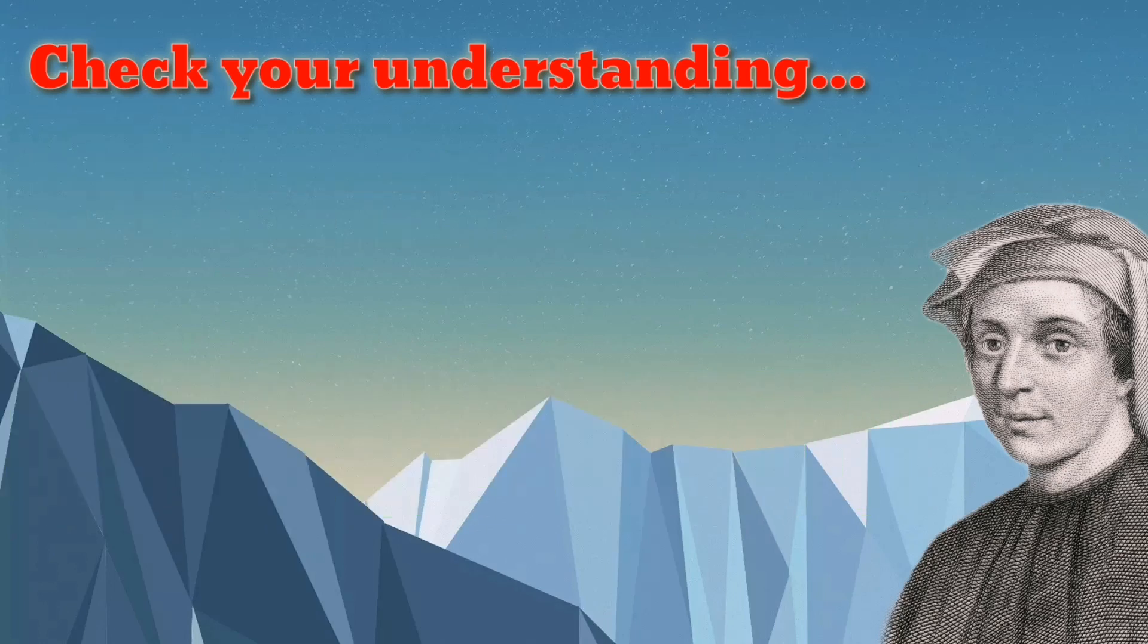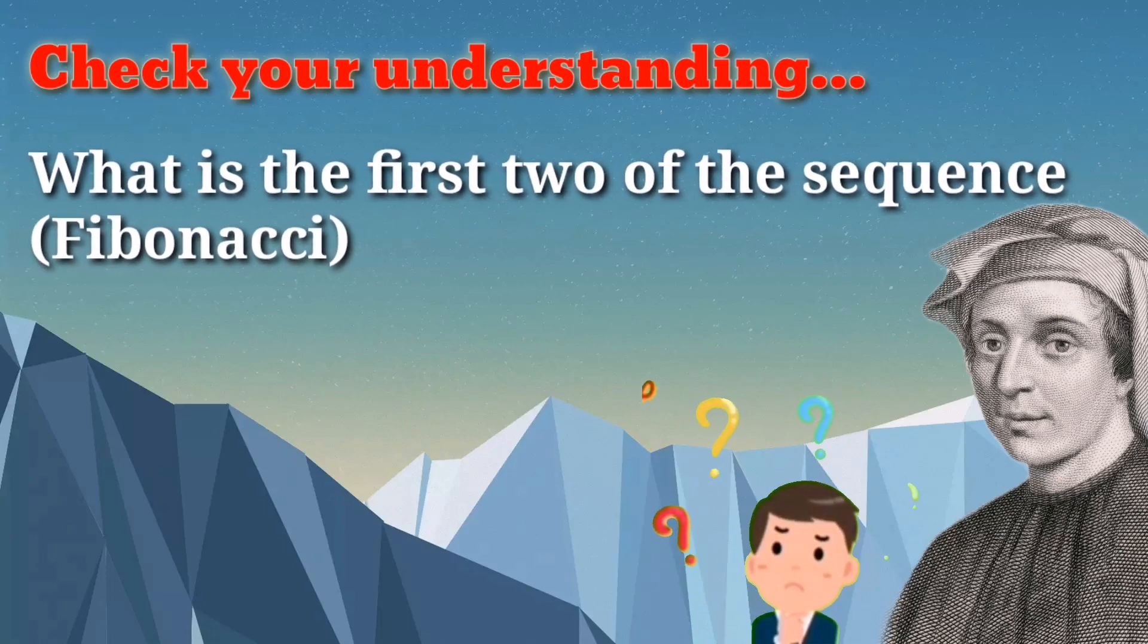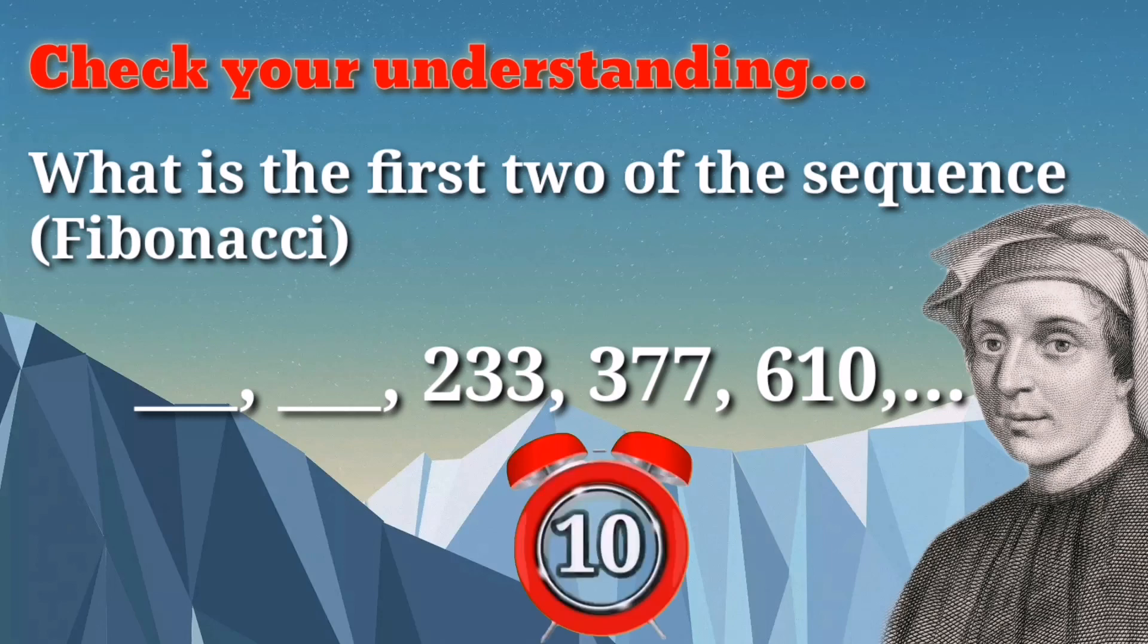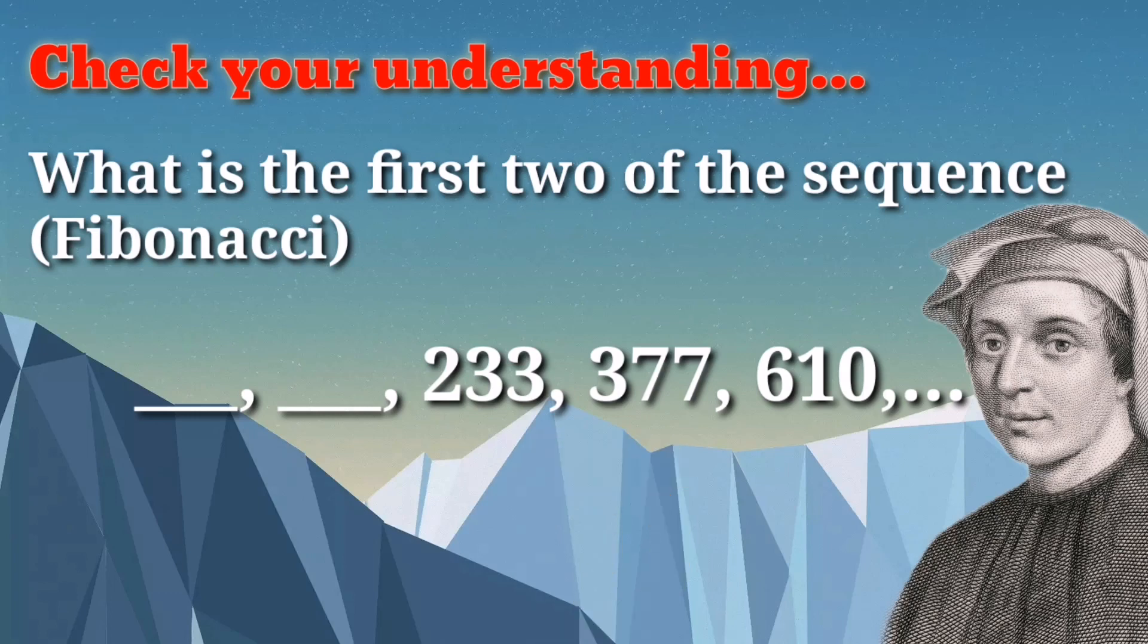So next, we have What is the first two of the sequence? Blank, blank, 233, 377, and 610. You have 10 seconds to answer. Time is up, and the answer is, What is your answer? The answer is 89 and 144. Got it? Very good.